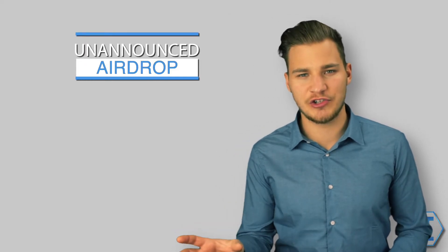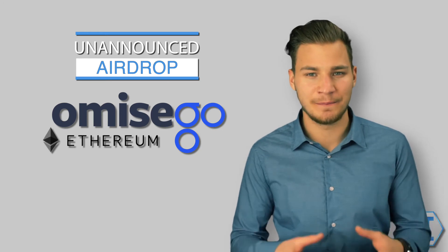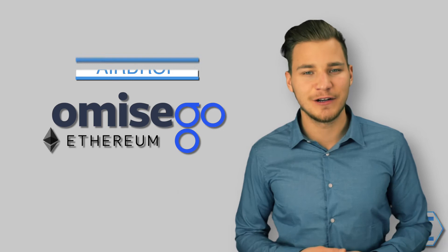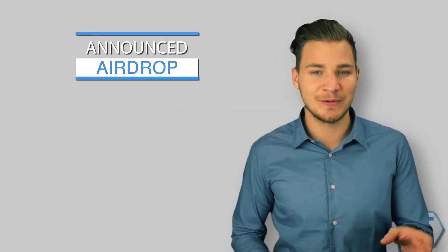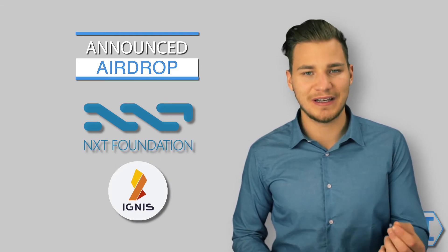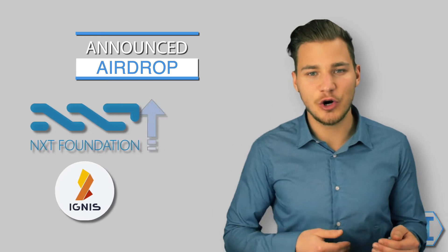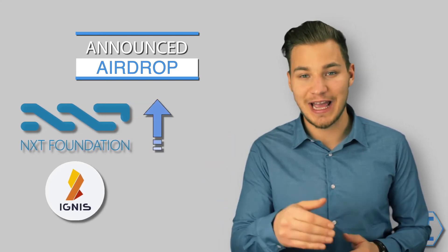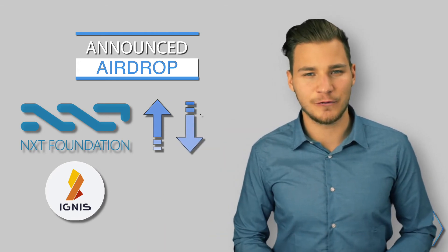So there are two different ways an airdrop works. The first one is an unannounced airdrop like it was the case with OmiseGo. And everybody who was holding Ethereum during the time of the snapshot of the airdrop would receive 0.075 OmiseGo's in return. In the second scenario, it's an announced airdrop like it was the case with Nex and Ignis. Everybody who was holding Nex on December 25th would get Ignis in return. And that drove up the price from Nex actually from $0.40 up to $2. But after the snapshot, it dropped tremendously back to $0.40 again. So definitely keep an eye out for that.